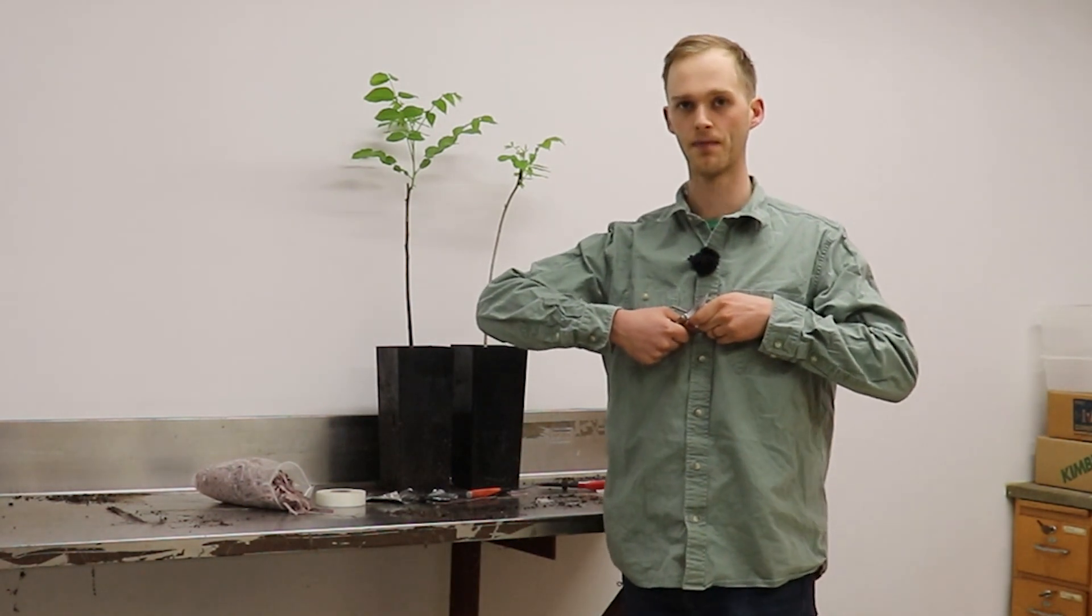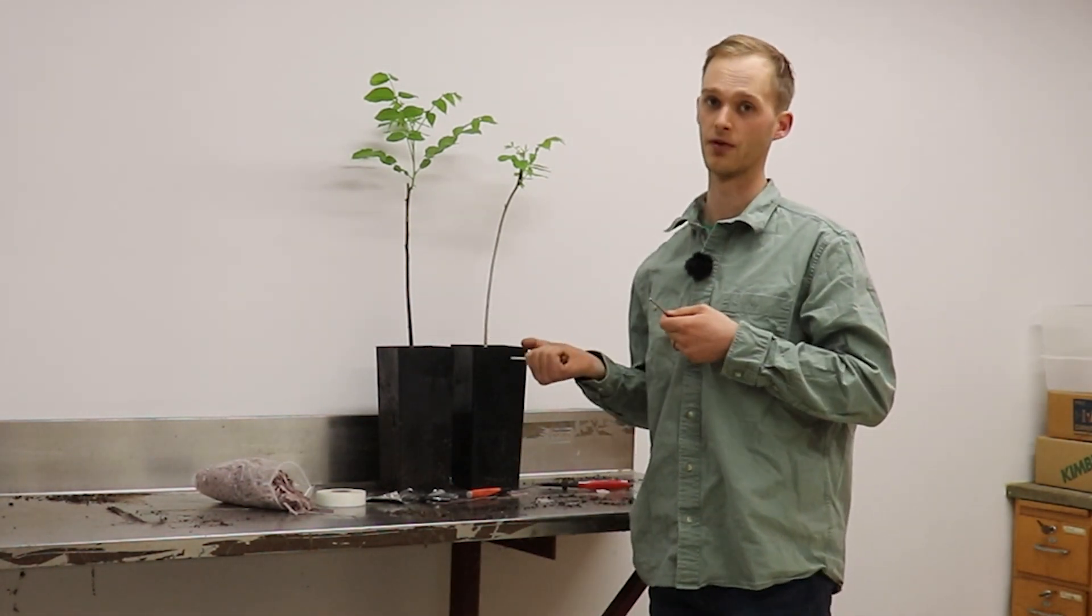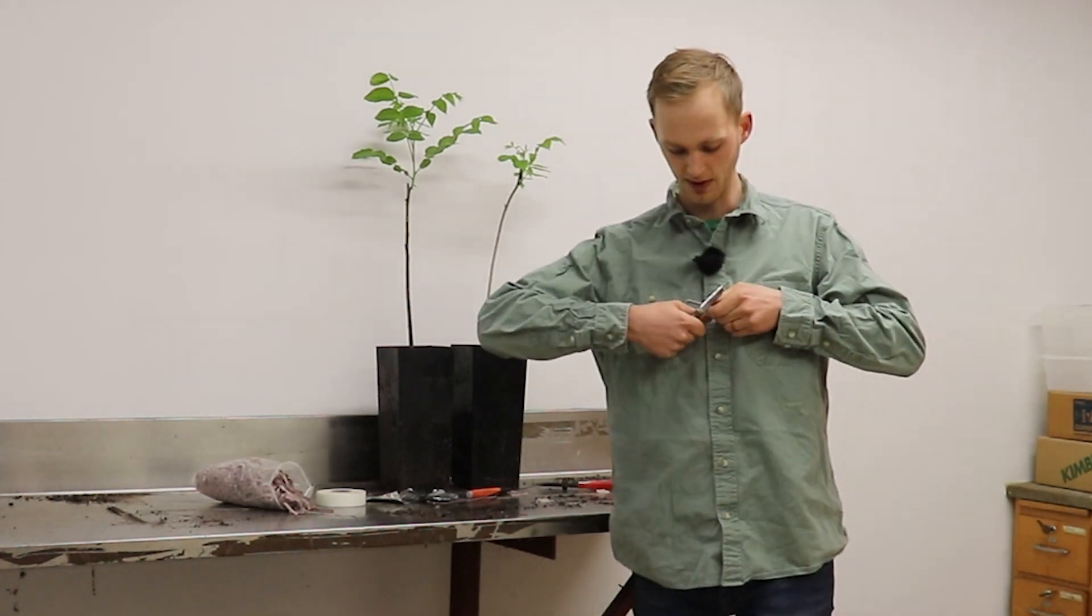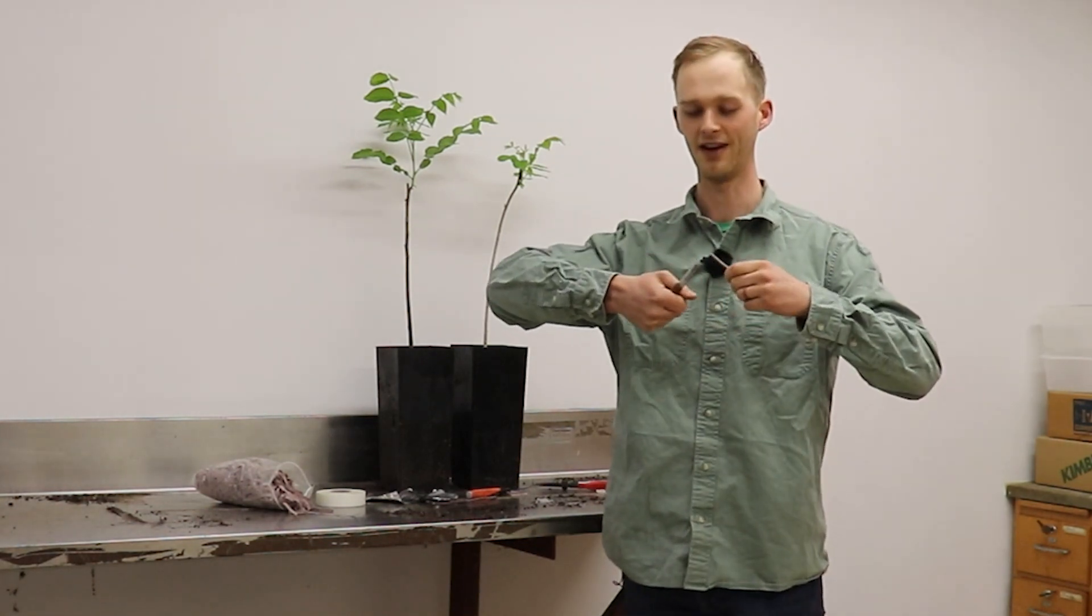I'm going to be showing you the side graft on the scion wood to create a wedge that is then inserted into the side of the rootstock. So to make our first cut, take the scion in your left hand, the knife in your right.